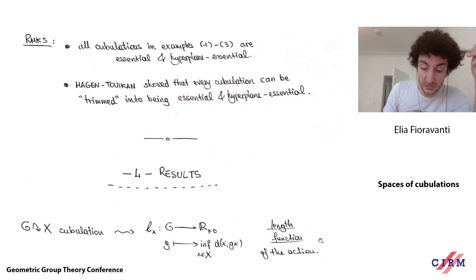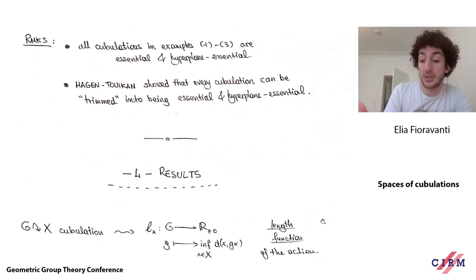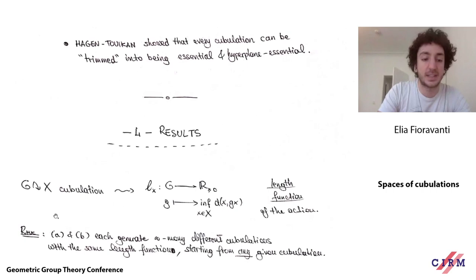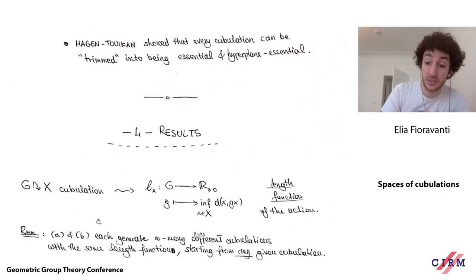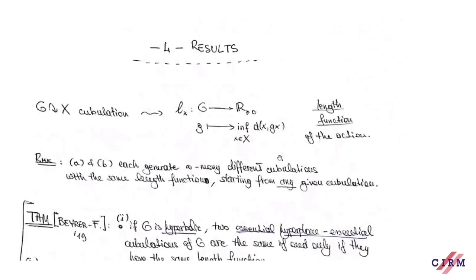We call this the length function of the cubulation. It's immediate that if two cubulations are the same, they have the same length function. But you can wonder if the converse holds: are cubulations with the same length function necessarily the same? Procedures A and B kill this hope in full generality — starting from any cubulation of any group, you can construct infinitely many that are pairwise distinct but pairwise have the same length function. However, this is not worrying, because all these cubulations with the same length function are constructed via procedures A and B, which we've decided are not interesting to us.